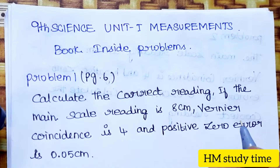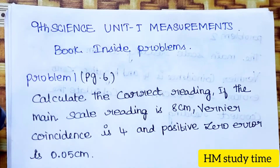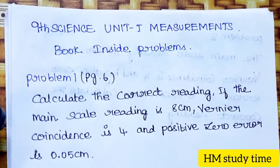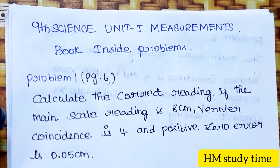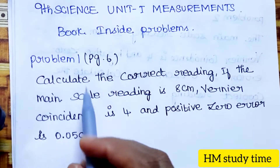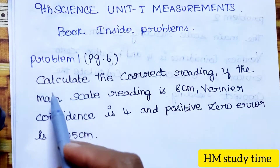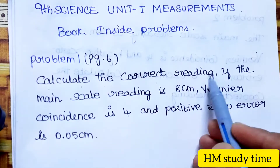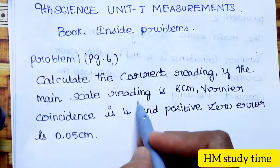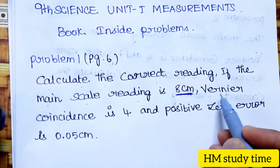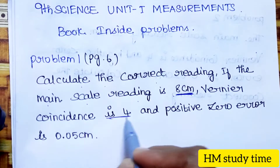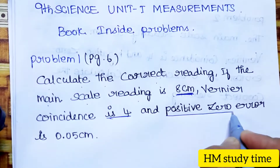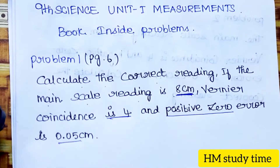Hello students, welcome to Hibamax study time. 9th standard science, unit 1: measurements, book inside problems. Problem 1, page no. 6: calculate the correct reading if the main scale reading is 8 cm, Vernier coincidence is 4, and positive zero error is 0.05.